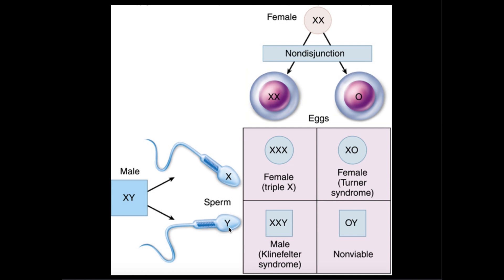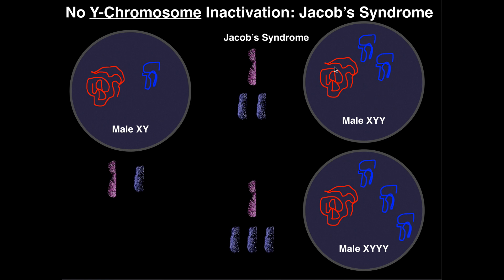Just imagine we have a sperm cell that momentarily had the genotype YY, and it's going to fertilize a normal secondary oocyte. If you have a sperm cell that's YY fertilizing a normal secondary oocyte that's X, you're going to end up with XYY. And that's what we see over here. So XYY is the most common genotype for Jacob's Syndrome — one X chromosome and two Y chromosomes.